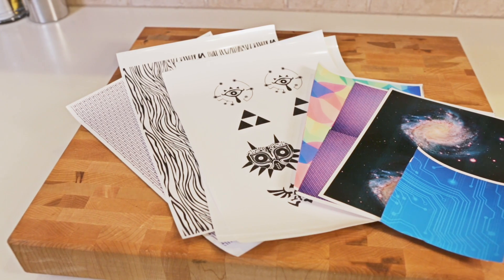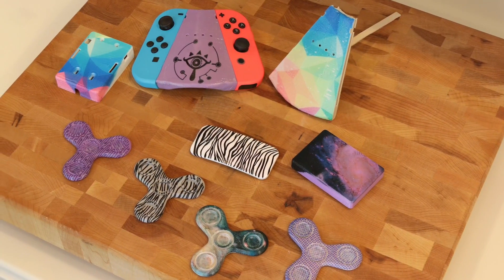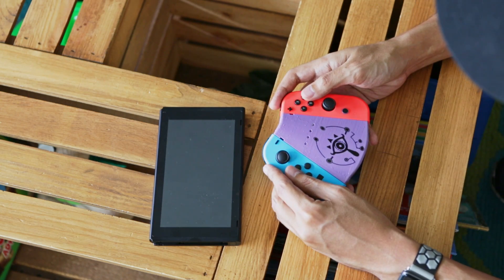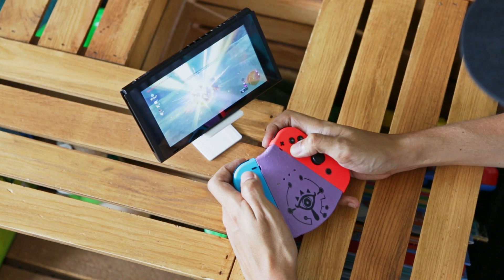But that's it, a super easy way to add full color graphics to your DIY projects. So what ideas do you have for hydro dipping? Let us know in the comments below. And don't forget to subscribe for more DIY projects from Adafruit every week.